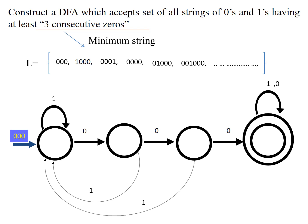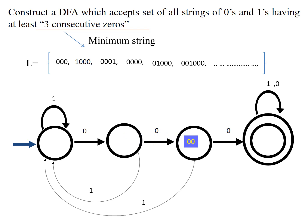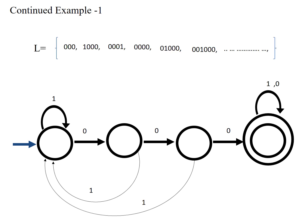Let us trace an example string to demonstrate. I will animate tracing '000'. Starting from the initial state, on zero we go to the second state — one zero consumed. Then on zero we move to the third state — two zeros consumed. Then on zero we move to the fourth state — three zeros consumed. All zeros are over and we are at the accepting state, so the string is accepted.